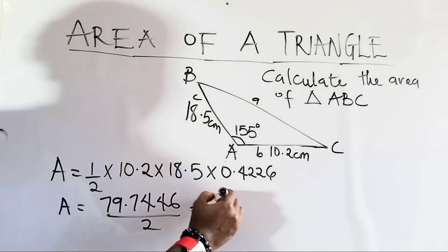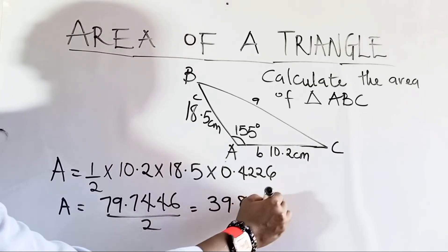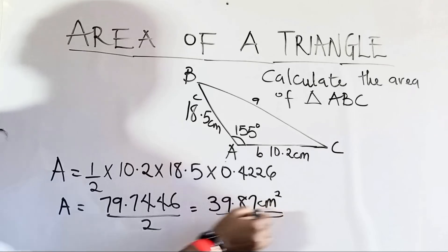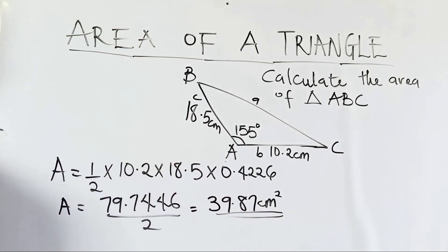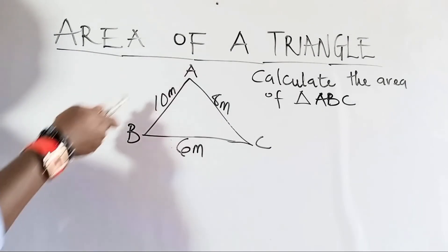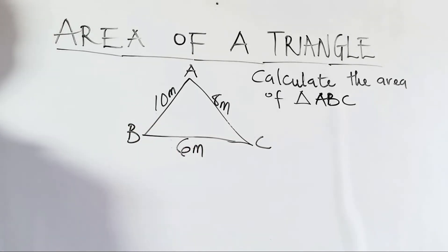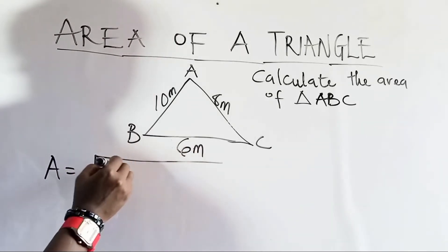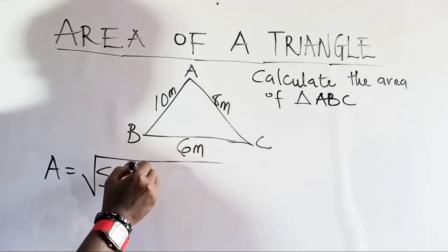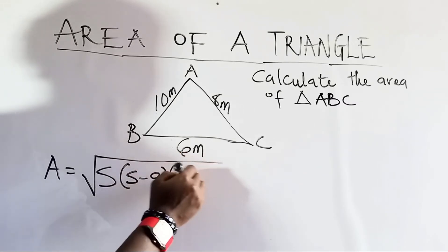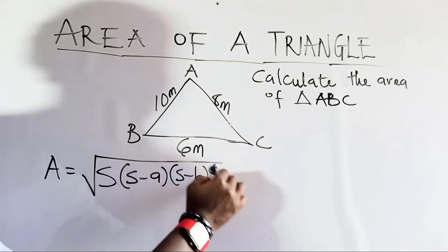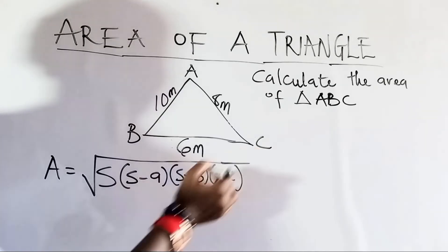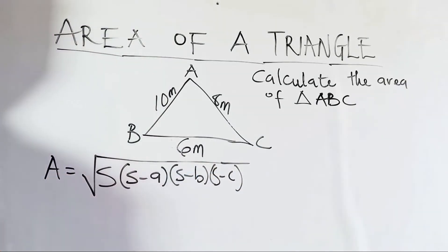To calculate for the area of triangle ABC, we are going to use a different formula. And that formula is called Heron's formula. The formula is giving us A equals the square root of s times (s minus a) times (s minus b) times (s minus c). This is the formula that is called Heron's formula.